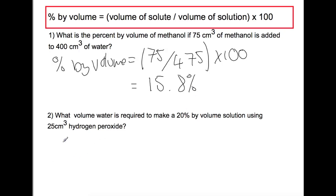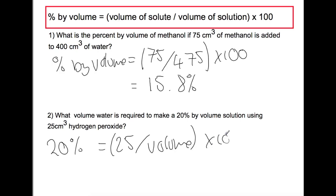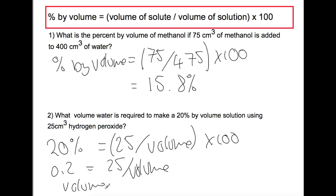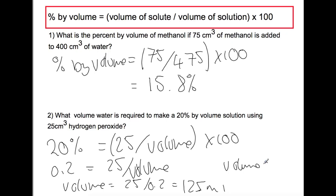In the second question, we're trying to find the volume of water needed to make a particular solution. We're making a 20% solution with 25 cm³ of hydrogen peroxide. Dividing both sides by 100 and solving gives a total volume of solution of 125 millilitres. Subtracting the hydrogen peroxide means you would need 100 millilitres of water to make this 20% solution.